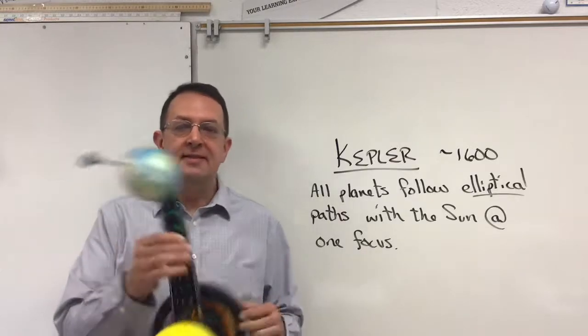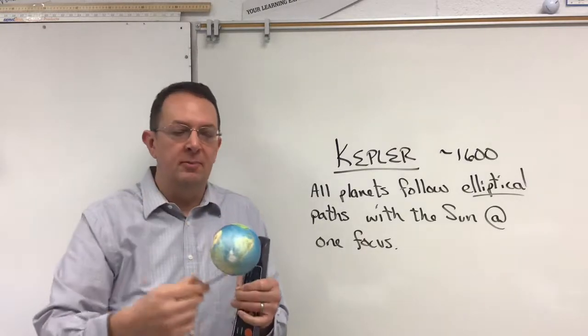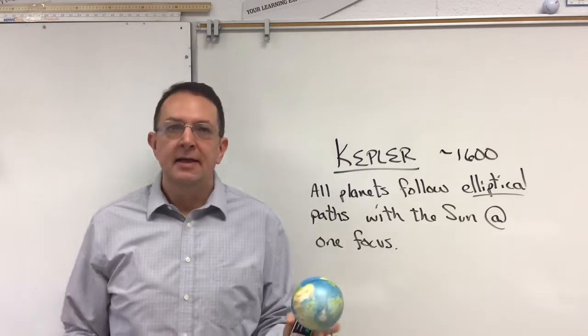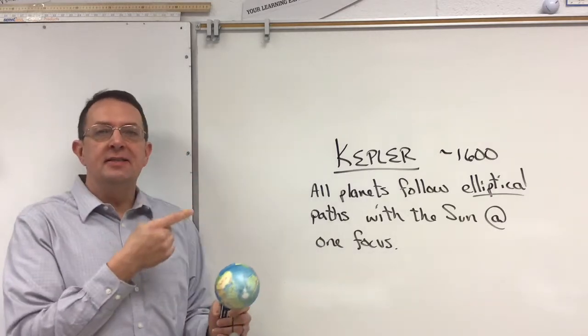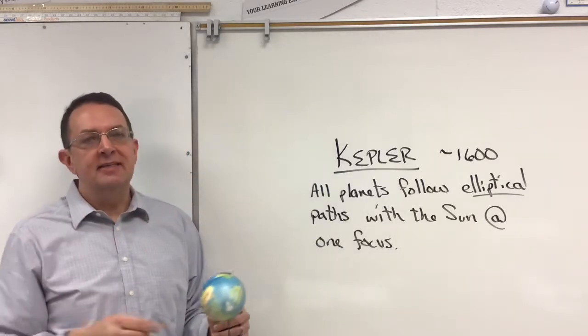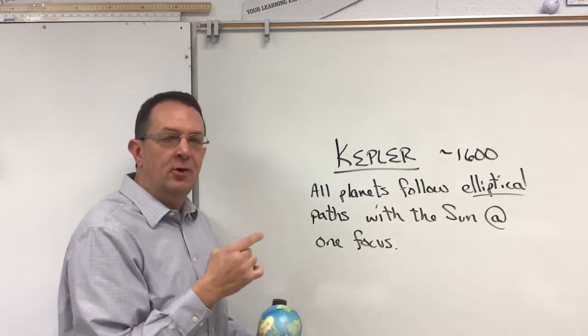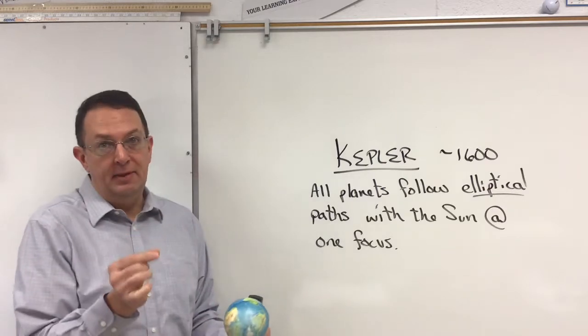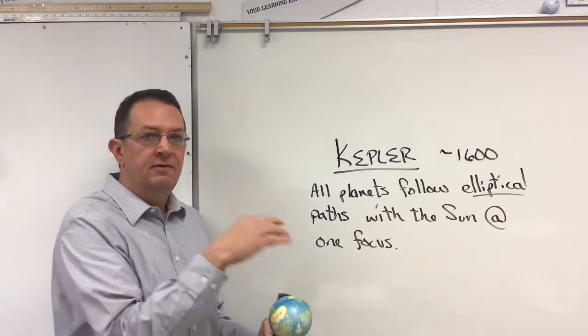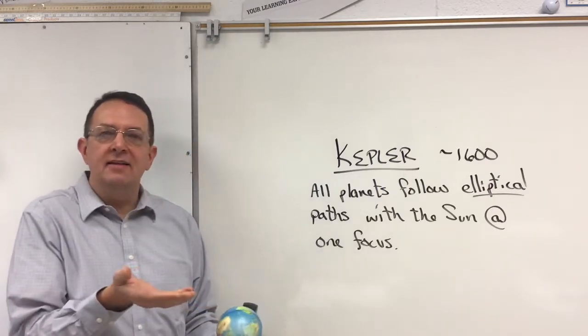Planets orbit the Sun and moons orbit the planets in this particular way. This was experimentally determined by Kepler around 1600 and you have all the planets will follow elliptical orbits with the Sun at one focus. So why exactly does this happen?